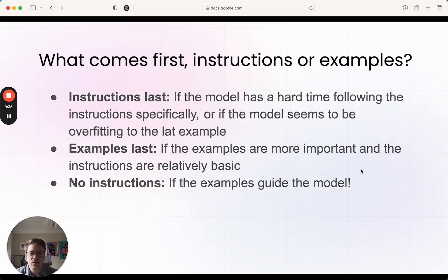Instructions or examples—what should come first? Instructions should come last if the model is having a hard time remembering what to do. If you throw so many examples at it that it gets caught up with what's an example versus the instruction, I would have the instruction last for the same reason that we just talked about in terms of recency bias. It will remember the last part a little bit more.